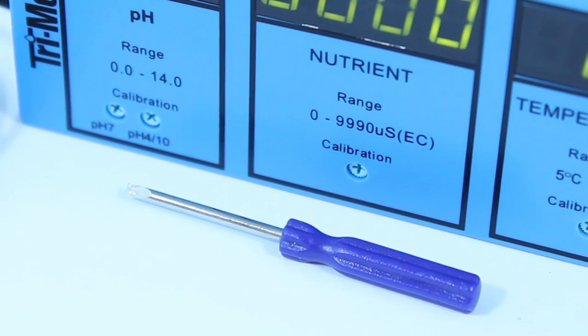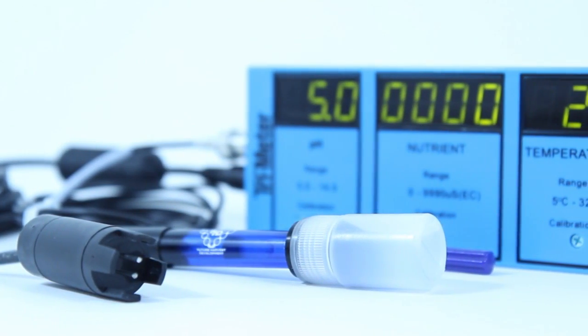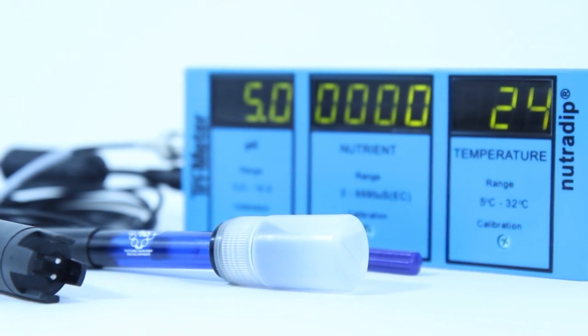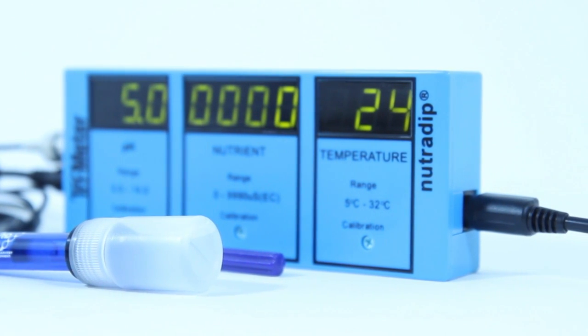The Trimeter comes with a two-year manufacturer's warranty, but should the meter malfunction after that, all internal circuitry is available to purchase separately, so you don't need to buy a whole new unit.